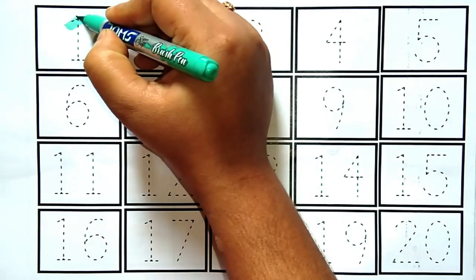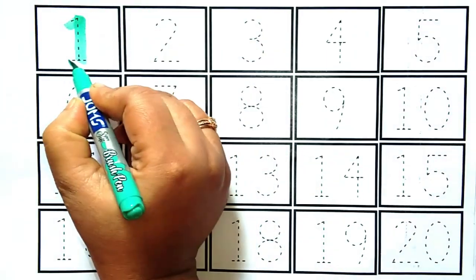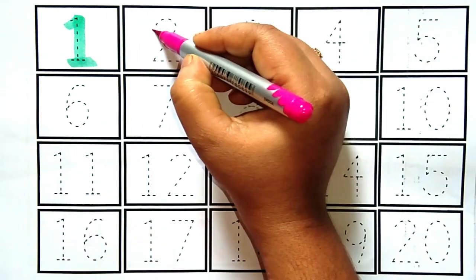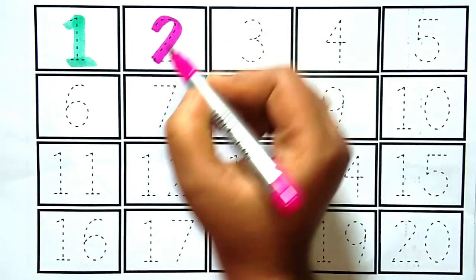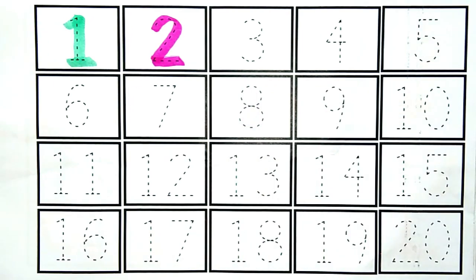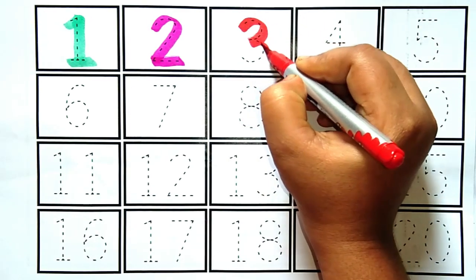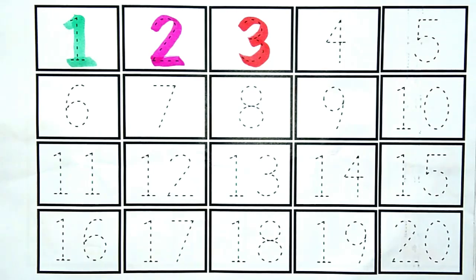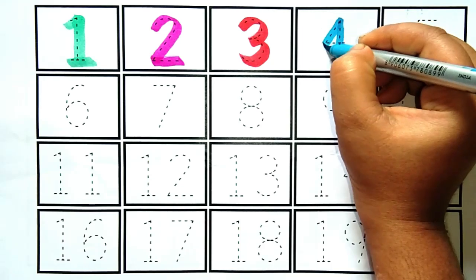Yeh hai number 1. Kia hai kids? Yeh hai number 1. Yeh hai number 2. Kia hai kids? Yeh hai number 2. Yeh hai number 3. Kia hai kids? Yeh hai number 3.